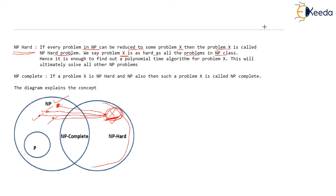Now what did you know about NP-complete from the previous video? If a problem X is both NP-hard and NP, just imagine this problem X belongs to NP class itself — there is a problem X in NP class such that all other problems of NP are reducible to this problem X. Then this problem X is NP-hard obviously, and X also belongs to NP. Such a problem is called NP-complete.